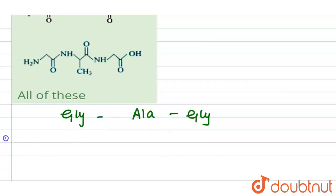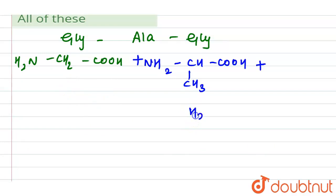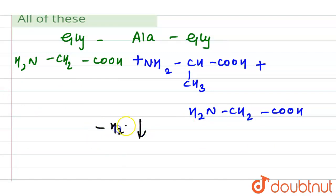The structure for glycine is H2N-CH2-COOH. For alanine it is NH2-CH(CH3)-COOH. And again we have glycine: H2N-CH2-COOH.